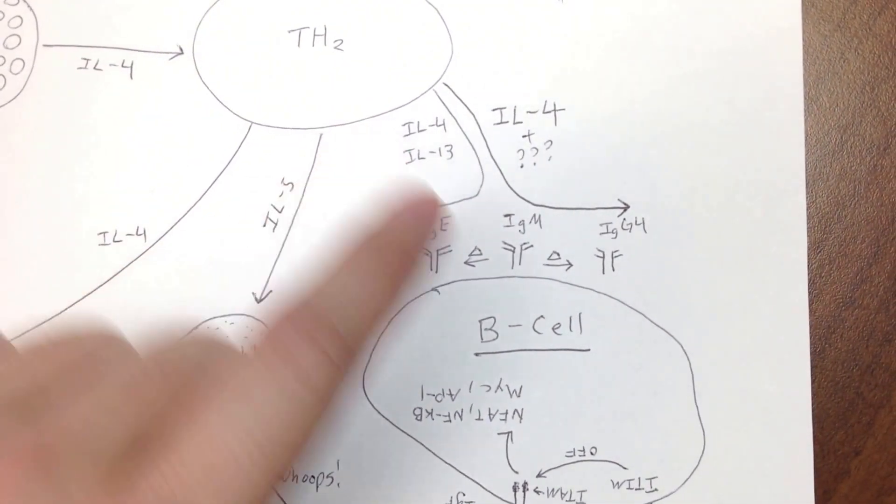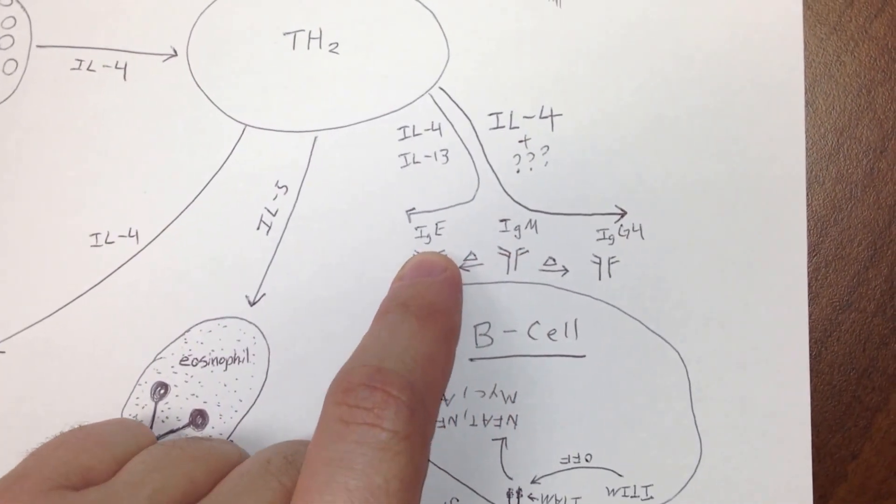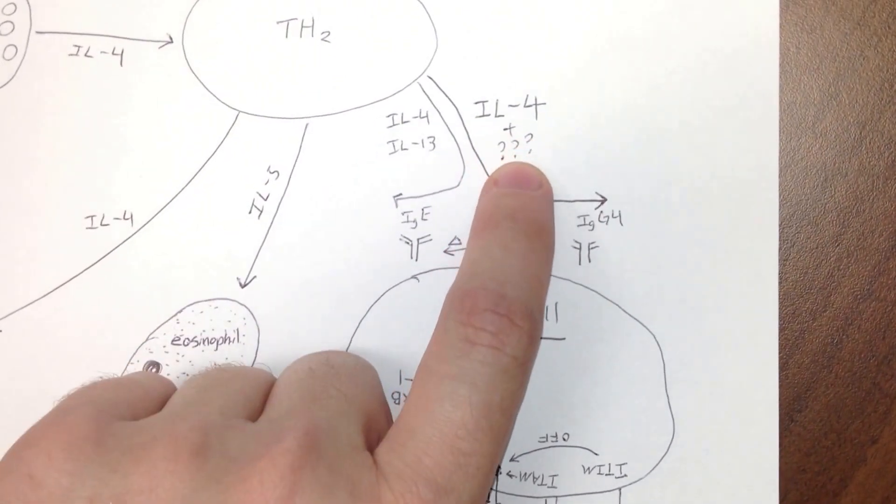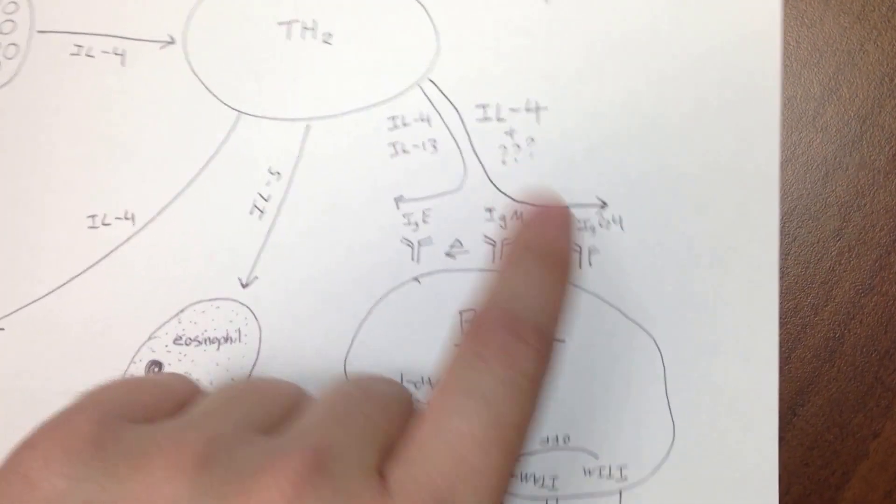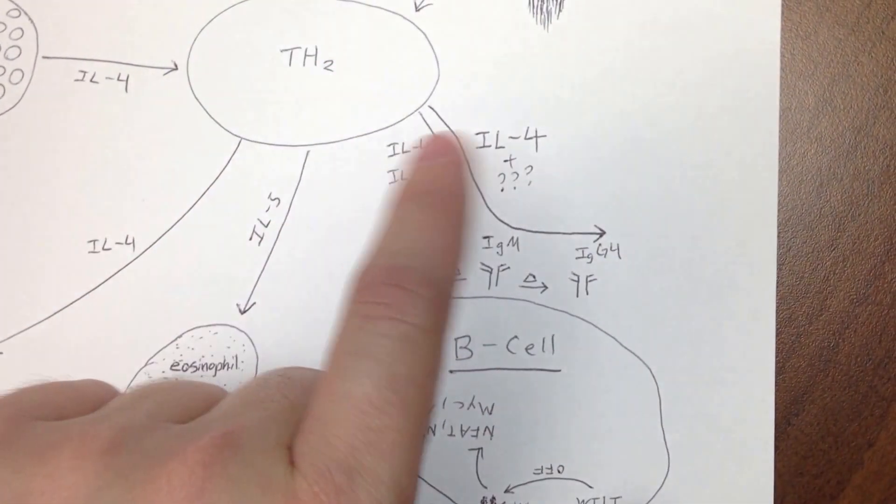What does that do? Well, on this pathway you can see IL-4 and IL-13 can tell the B cell to stop making IgM and make IgE instead.